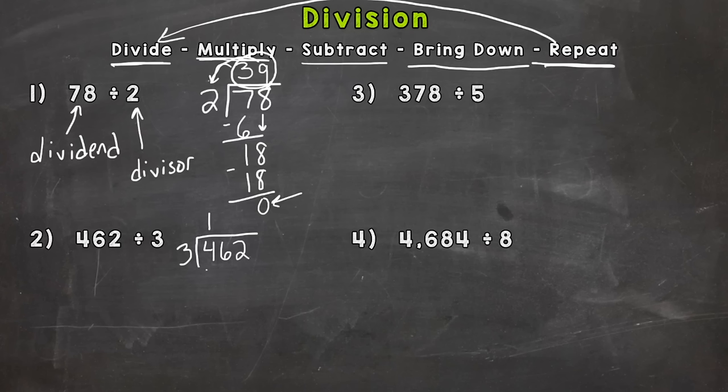1 times 3 is 3. Subtract. 4 minus 3 is 1. Then we bring down the next number, which is the 6. And we start everything over. So we divide.